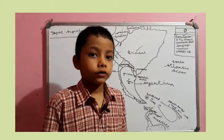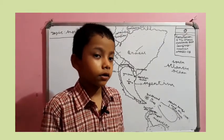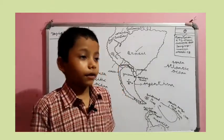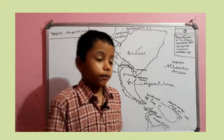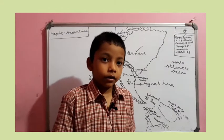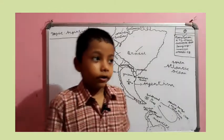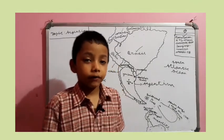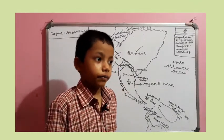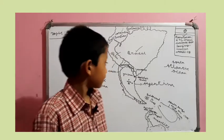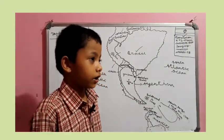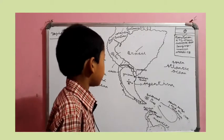Second: Argentina borders Chile, Bolivia, Paraguay, Brazil, and Uruguay. Now the third one: what does Argentina border? The answer is Uruguay, Brazil, Paraguay, Bolivia, and Chile.